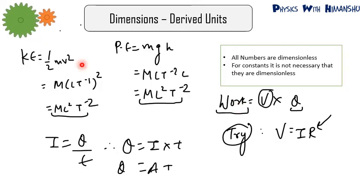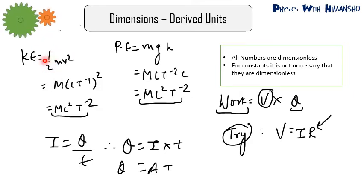Now suppose I want to find the dimension of kinetic energy. Kinetic energy is ½mv². Remember that all numbers are dimensionless — numbers like 2, 3, 4, 5, and pi are dimensionless, but constants like g (acceleration due to gravity) have dimensions. The number ½ has no dimension. So dimension of KE is M × (LT⁻¹)² = ML²T⁻². Similarly, potential energy is mgh: M × LT⁻² × L = ML²T⁻².